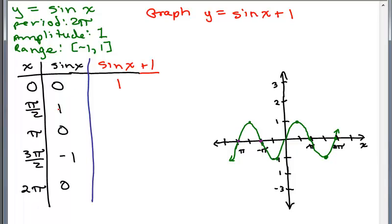Putting in π/2, sine of π/2 is 1 and then we're going to add 1 to it. And we will get these values right here. Notice the negative 1 plus 1 will give you a 0 and 0 plus 1 will give you 1 again.